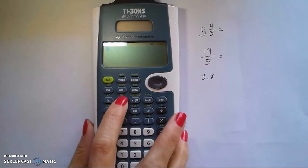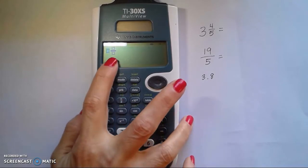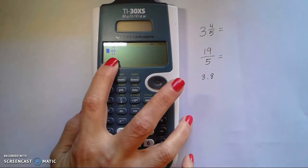Click the U, N over D key. That is our units with a numerator over denominator key. You can see on the board that it's giving us a fraction with a whole number.